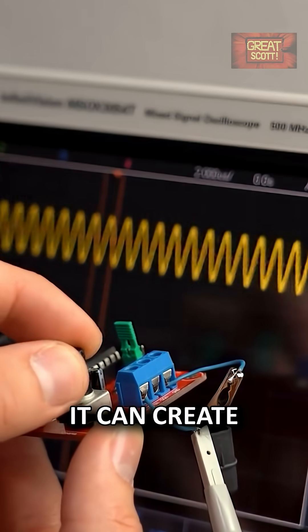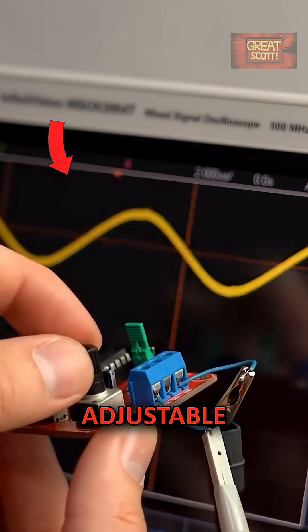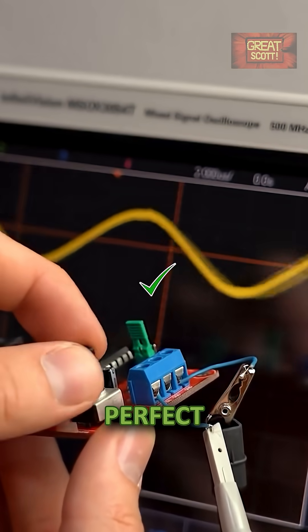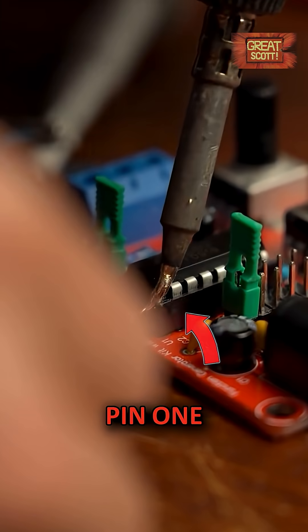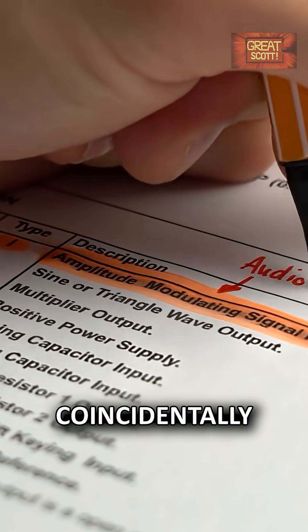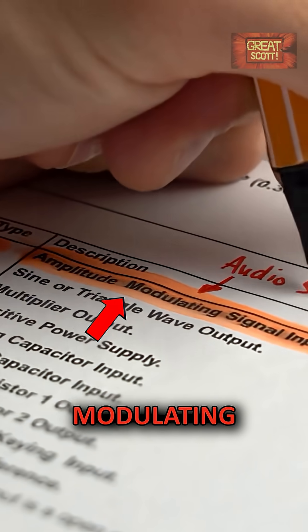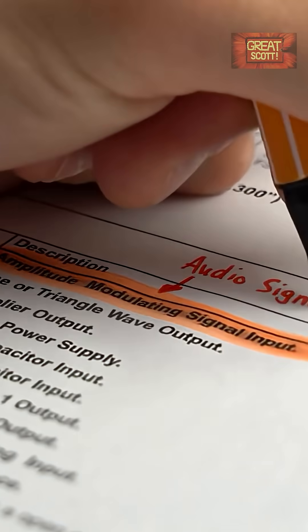On its output, it can create a sine voltage with an adjustable frequency that is perfect for our AM signal. To modulate it, all we have to do is feed pin 1 of the IC, which is coincidentally called amplitude modulating signal input pin, with our audio signal.